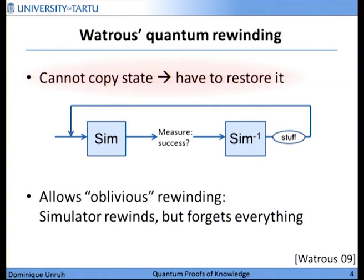You run it, you measure whether it worked — it will have an output bit: succeeded or not. You measure that. If it works, you're done. If not, you apply the inverse of the simulator. That's a nice thing in quantum mechanics: any operation that is so-called unitary has an inverse. So you can apply the inverse computation of what the simulator just did, and hopefully you are then back in the original state. There are subtleties here which imply that you need to do some additional stuff, but that can all be solved and you can find it in the Watrous paper.